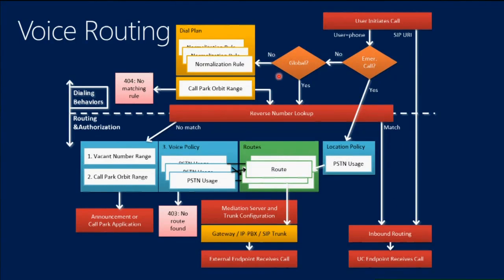If the number I typed in is not global — for example, I entered Corneal's extension 1123 — we do normalization. Normalization rules are part of a dial plan. Each user has a dial plan assigned, and I might have a rule that says 1123 is actually +447371123. It normalizes the number to this E164 format. After normalization it goes to the reverse number lookup. We can assign different dial plans to different users because users in different countries may use the same extension to call different local people.